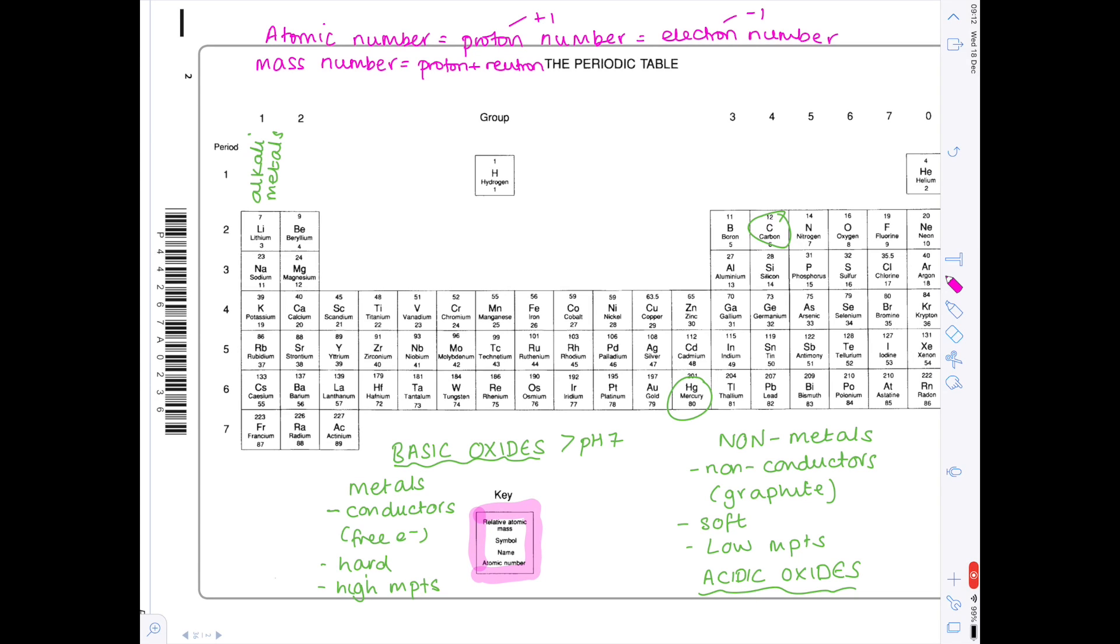Now that top number is the mass number and that's made up of both proton and neutron number. Why is that? Well that's because protons have a mass of one and neutrons have a mass of one.